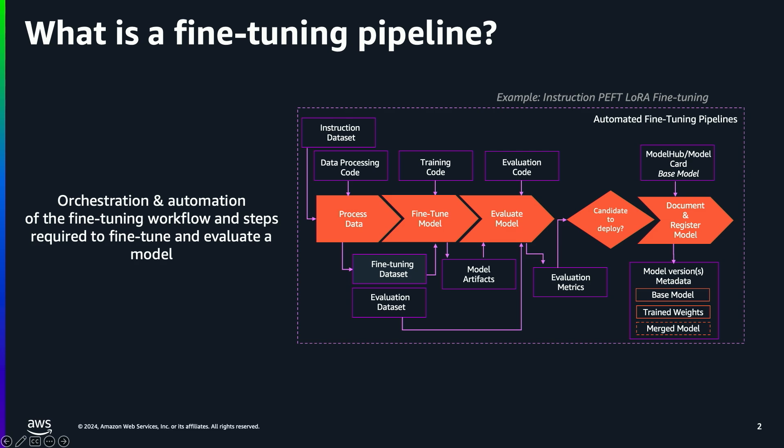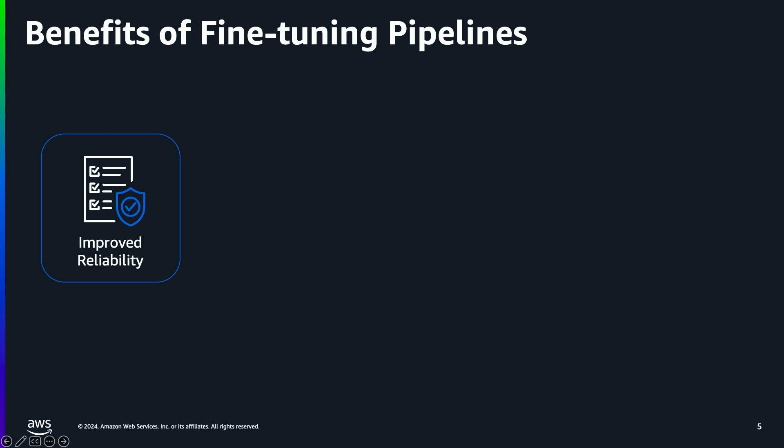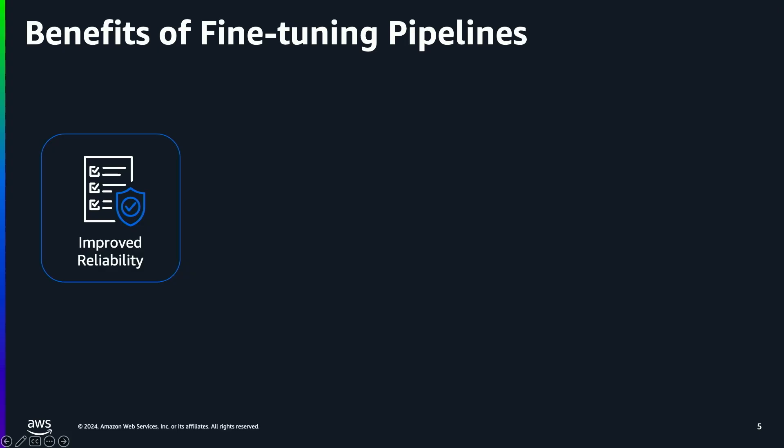So what's the benefit of creating a fine-tuning workflow? The automation of the workflow creates more reliability in the collection of key metadata about the base foundation models, the data, the training libraries, and evaluation metrics. Manually collecting this metadata is really prone to error. There's also more reliability in the processes used to tune and evaluate, as well as the technology used — things like libraries that are used as part of your fine-tuning workflow. Pipelines also provide the increased ability to repeat the workflow, especially when you're regularly performing fine-tuning activities based on feedback or in use cases like hyper-personalization.